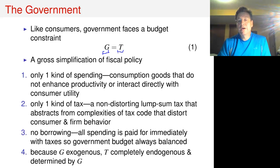We also have only one kind of tax, a non-distorting lump sum tax. This government can't borrow, so all of its spending has to be financed with taxes contemporaneously. Because government spending is exogenous, taxes are completely endogenous and determined by government spending.